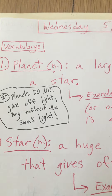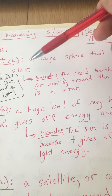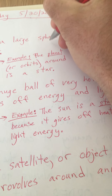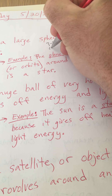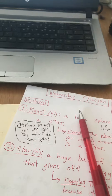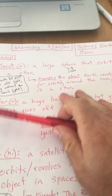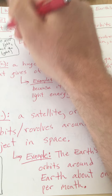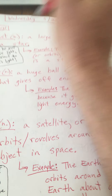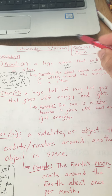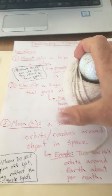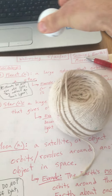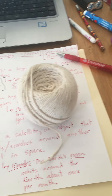Planet is a noun — it's a thing. A planet is a large sphere, which is just a 3D circle, like a ball. So it's a large sphere that orbits a star — it revolves around a star. So if this is a star, a planet orbits or revolves around the star.